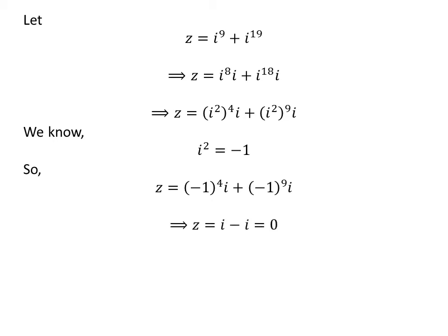As minus 1 raised to the power of 4 equals 1 and minus 1 raised to the power of 9 equals minus 1, z is equal to i minus i. This is equal to 0.